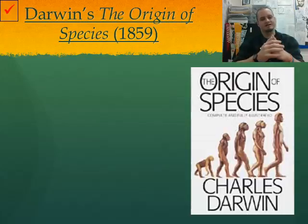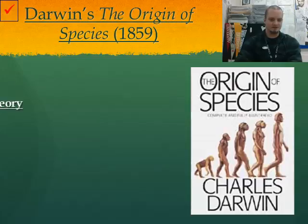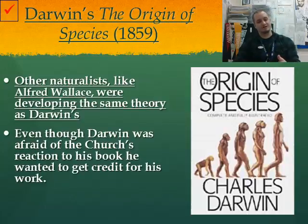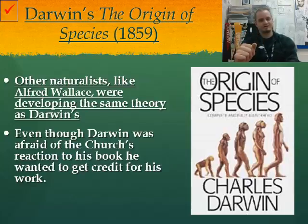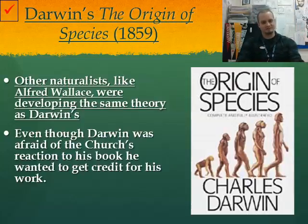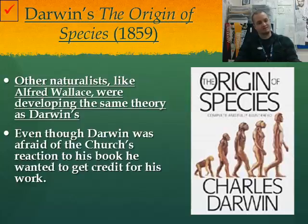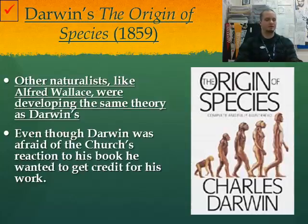Darwin, with all these theories in mind, was led to create his book called The Origin of Species. Other naturalists such as Alfred Wallace were developing the same theory around the same time. Even though Darwin was afraid of the church's reaction to his book, he wanted to get credit for his work. Wallace was very unlucky — much like Darwin, he was sailing around the world collecting from different species and came to the same conclusion. Unfortunately, while returning, his boat burned down and he lost everything. When he saw Darwin was developing the same theory, he contacted him and urged him to let the people know. With help from Wallace, Darwin released The Origin of Species.